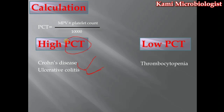The most important and common cause through which PCT decreases is thrombocytopenia, in which the platelet amount decreases, so obviously PCT also decreases. Thrombocytopenia may also occur in cases of chemotherapy, radiotherapy, alcoholism, HIV or AIDS disease, and EBV. Previous video lectures on these topics are available on the channel.